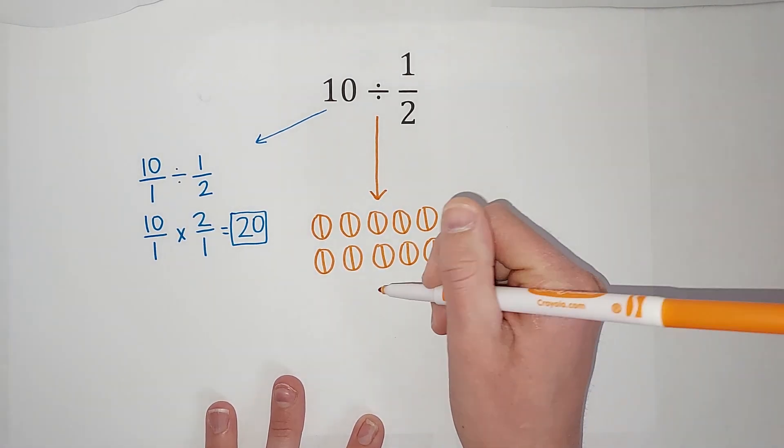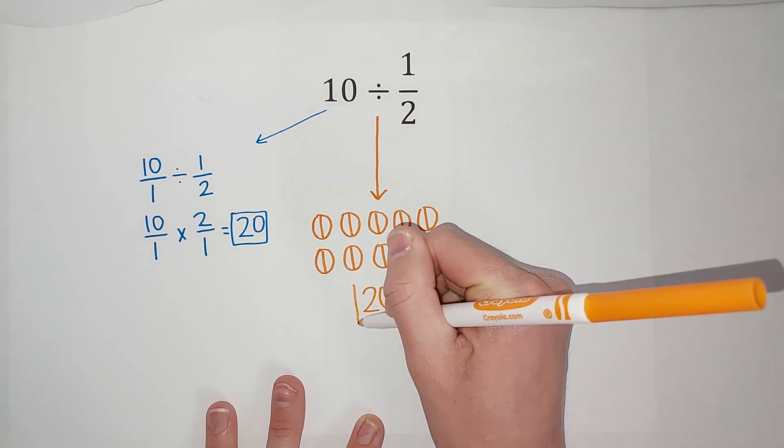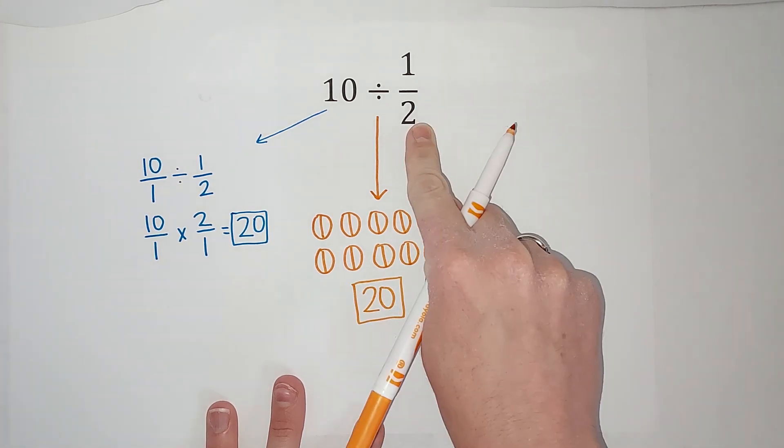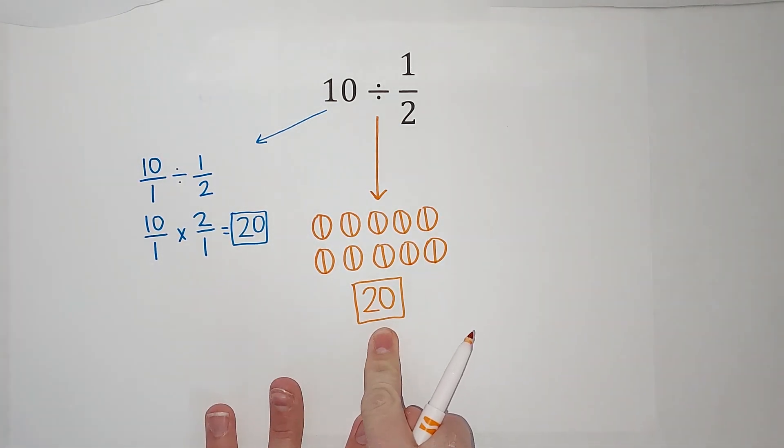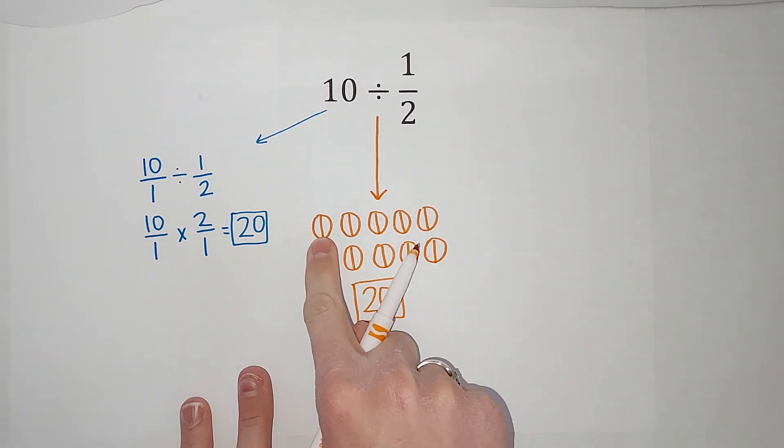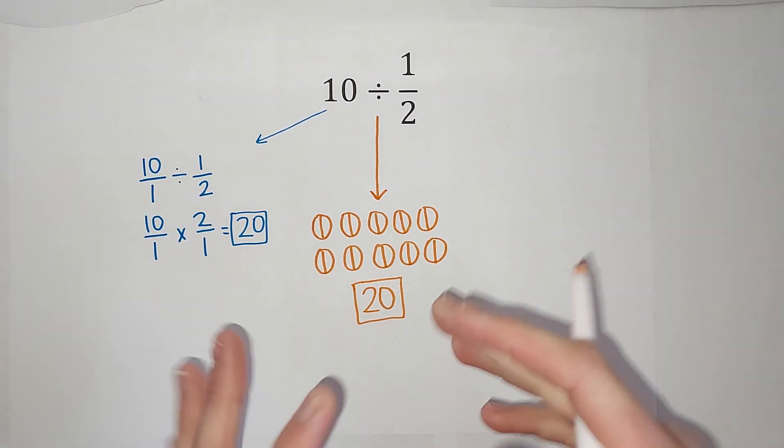Well, that is 20 halves, right? So how many halves are in 10? 20. And it was two for every one. So we multiplied by two essentially, right?